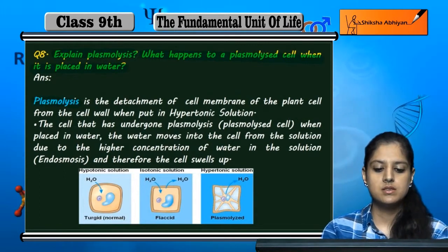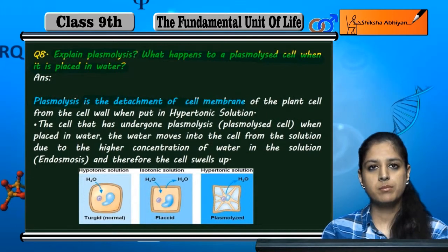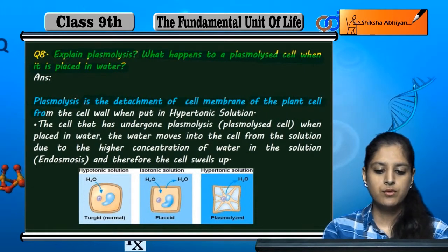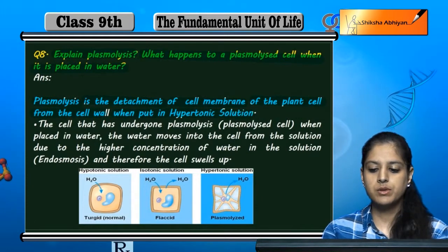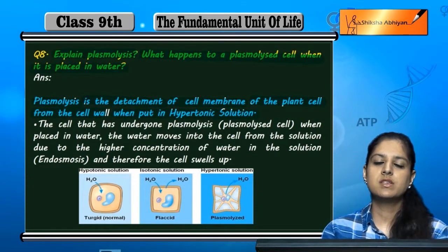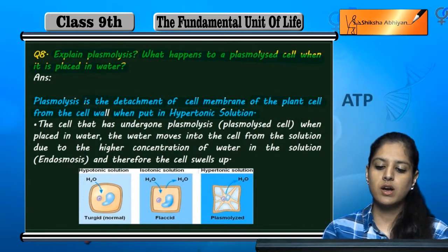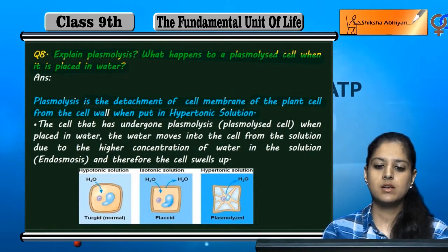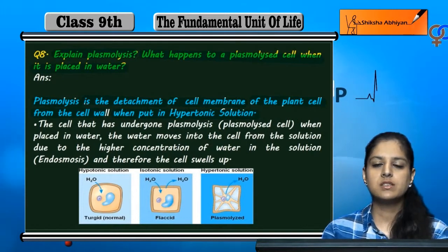Plasmolysis is the detachment of the plant cell from the cell wall when put in a hypertonic solution. Because of plasmolysis, the cell is shrinked. If we keep a plant cell in a hypertonic solution, what happens to the plant cell?